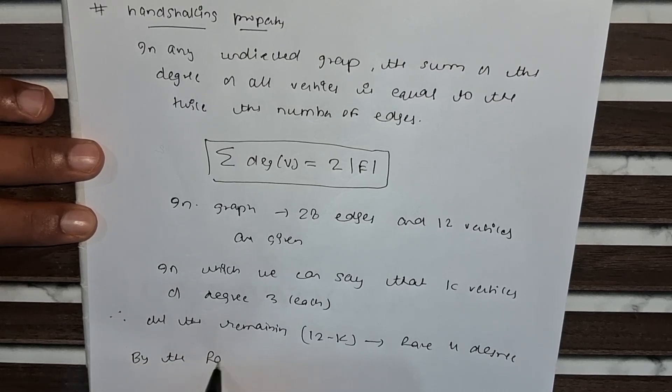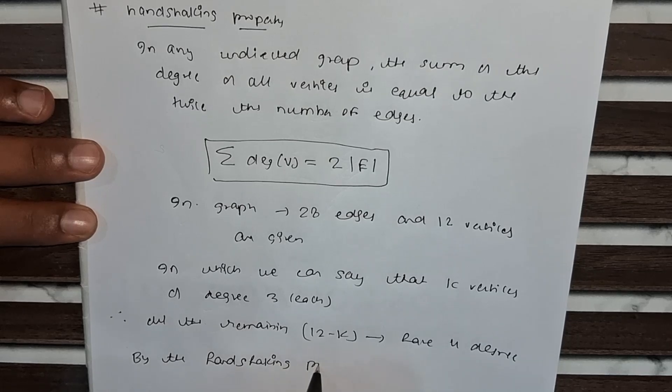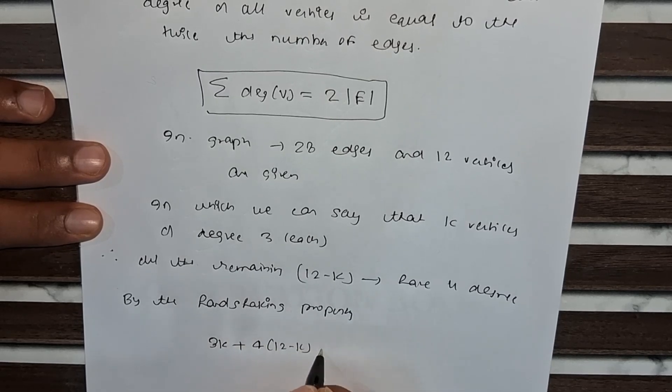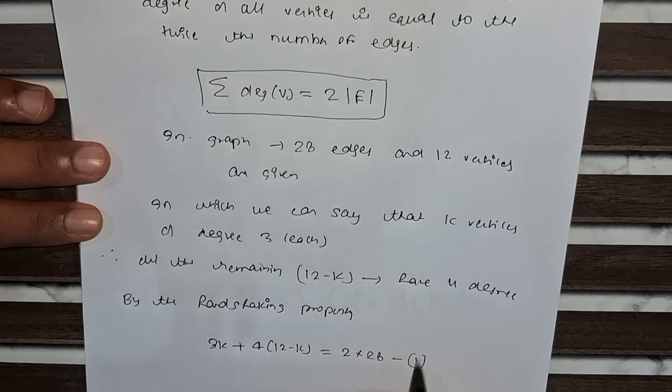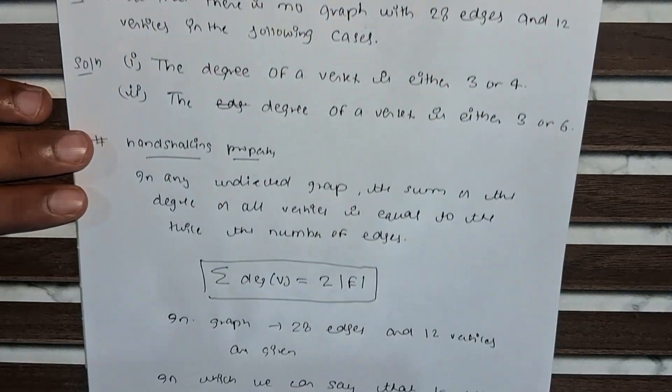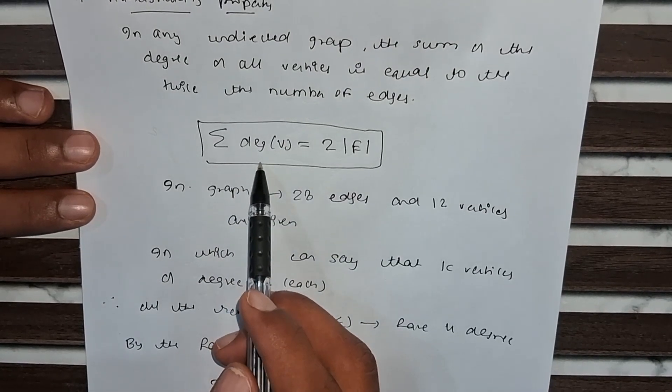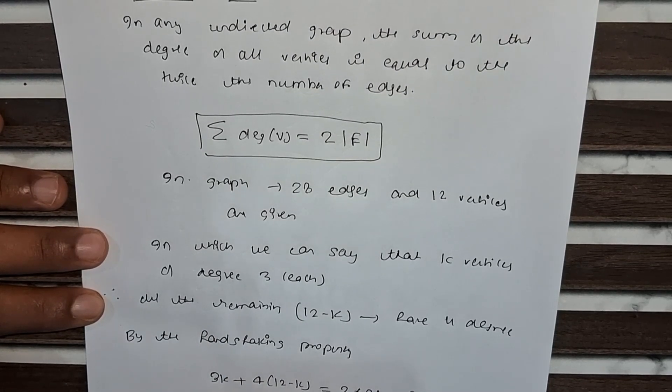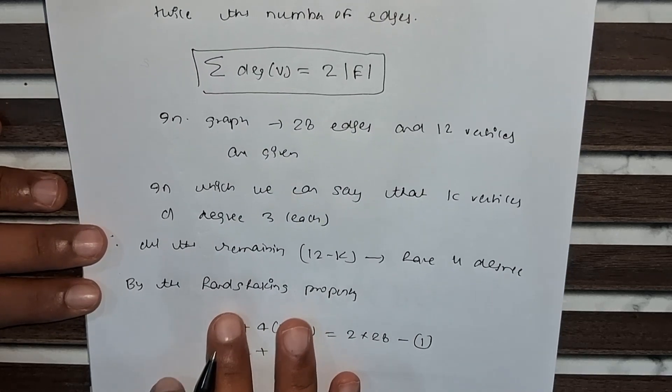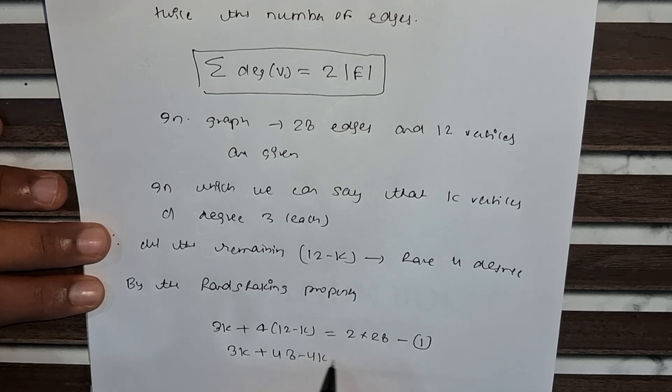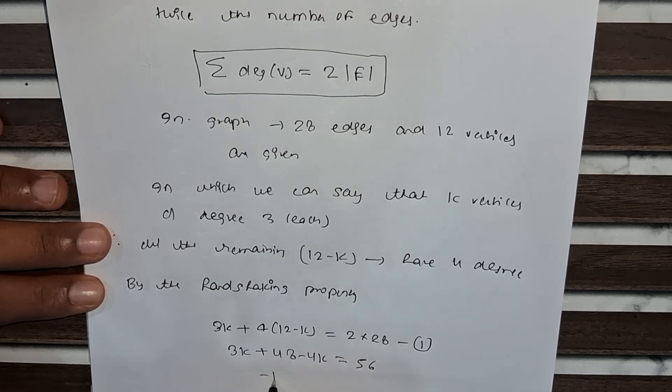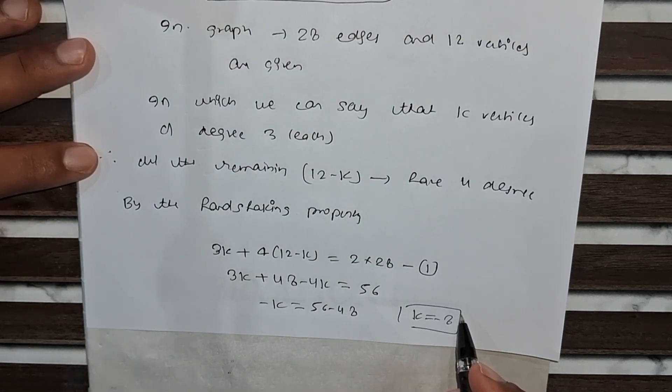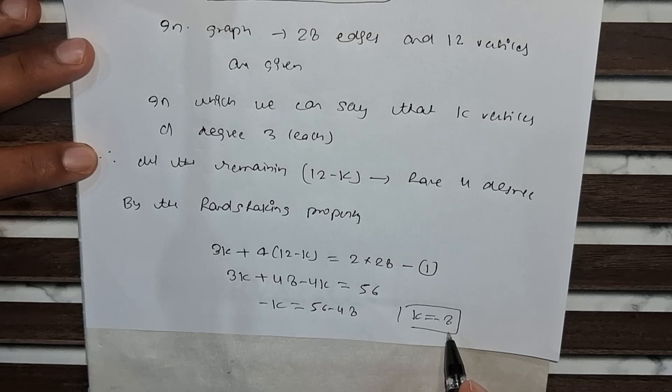By the handshaking property: 3k plus 4 into (12 minus k) equal to 2 into 20. Because 28 edges are given in this question, and the expression of handshaking property is sum of all degree of vertices is equal to twice the number of edges. So 3k plus 48 minus 4k equal to 56. So minus k equals to 56 minus 48, k equal to minus 8.